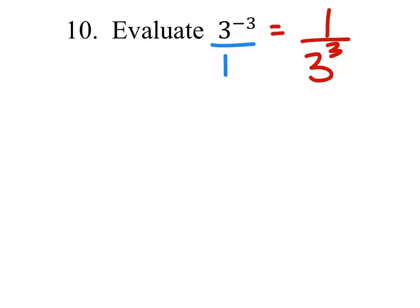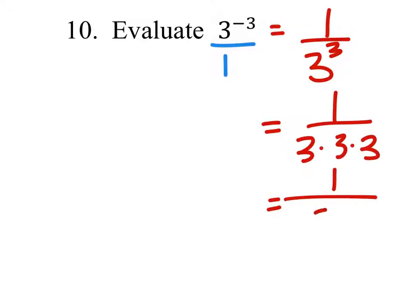And then we just got to find out what 3 to the power of 3 is. That's 3 times 3 times 3, which would be 9 times 3, and that's 27.